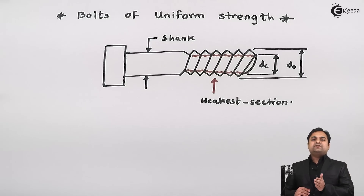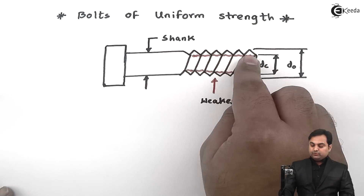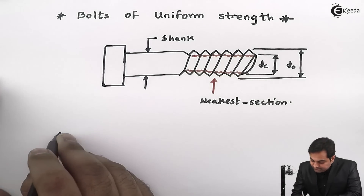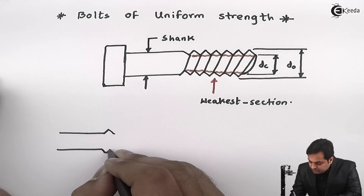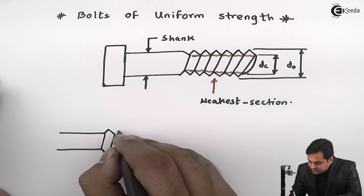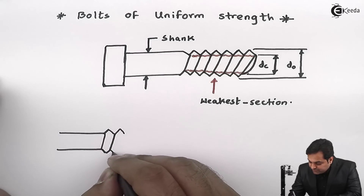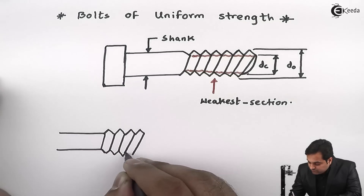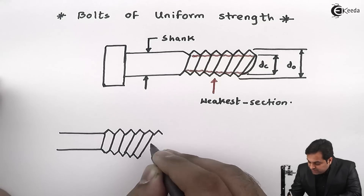We have to make a bolt of uniform strength — that is, the strength is the same throughout. One method is to reduce the shank diameter down to the core diameter. Here I am explaining this method to get bolts of uniform strength, showing the threaded section.